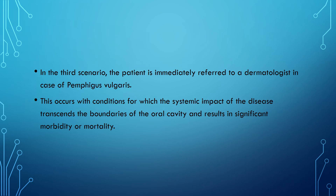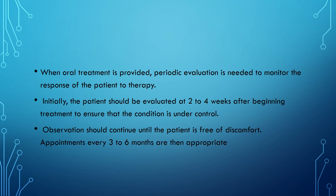If the patient is diagnosed with Pemphigus Vulgaris, referral to a dermatologist is needed, particularly when the systemic impact of the disease transcends the boundaries of the oral cavity and results in significant morbidity or mortality. When oral treatment is provided, periodic evaluation is needed to monitor the patient's response to therapy. The patient should be evaluated at 2 to 4 weeks after beginning treatment to ensure the condition is under control, with observation continuing until the patient is free of discomfort. Appointments every 3 to 6 months are then appropriate.